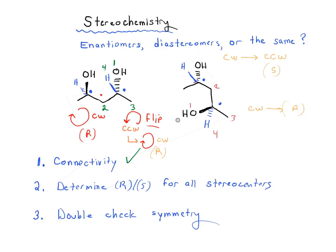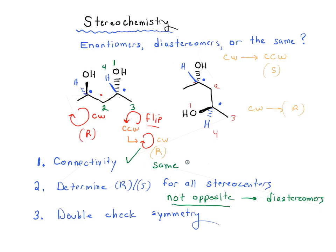So we've got R, R on the left and S, R on the right. Same connectivity, so they're not constitutional isomers. The R and S designations are not opposite — if they were exactly opposite, they would be enantiomers. But they're not opposite, therefore they're diastereomers. We can double-check symmetry as step 3, but that's not applicable here.